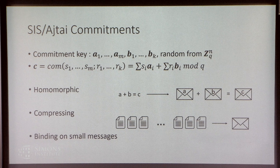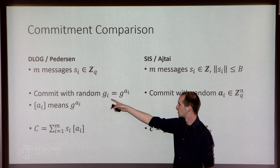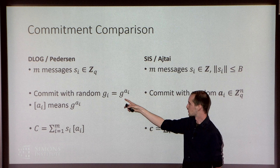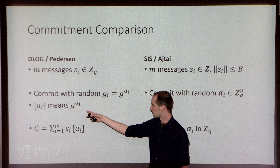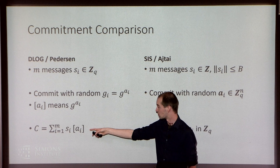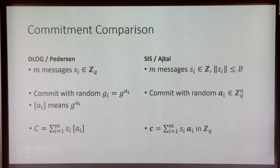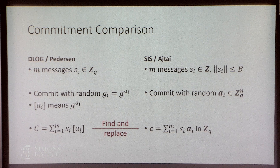Let's compare these two commitments. I'll rewrite the Pedersen commitment slightly — writing all group generators g_i in terms of a common generator g, so g_i = g^{a_i}. Using additive notation with square brackets meaning g to the power a_i, Pedersen commitments become C equals the sum of s_i times [a_i]. Looking at the SIS-based commitment on the right, it's also a linear combination of vectors a_i — they look almost exactly the same. So our approach to constructing lattice-based bulletproofs is really just a find-and-replace operation, and we're going to fix everything that goes wrong.